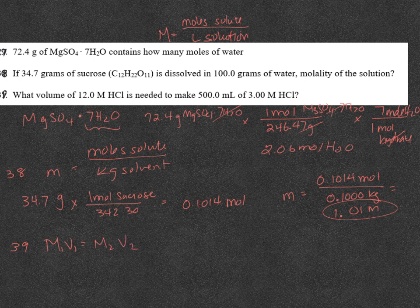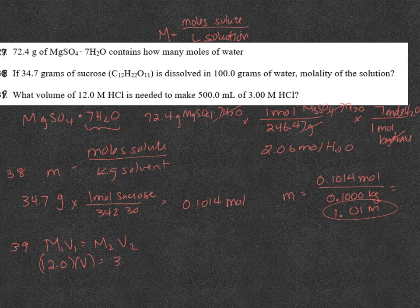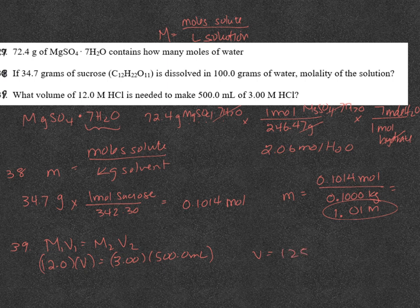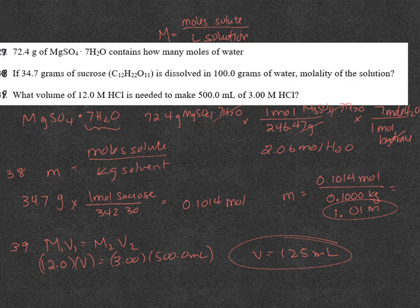And you don't even have to put this into liters. You can leave it in milliliters because the conversion factor would cancel out. So what we have is we have 12 molar. I want to know what volume that is. I'm going to try and make a 3 molar solution and 500 milliliters. So multiply 3 times 500, divide by 12. I would need 125 milliliters of the 12 molar HCl.